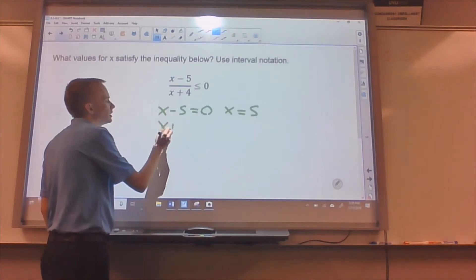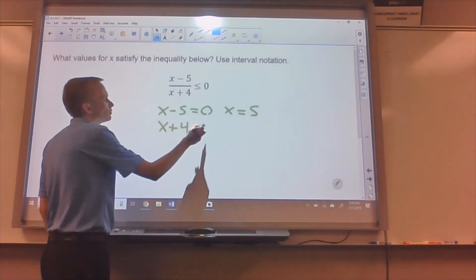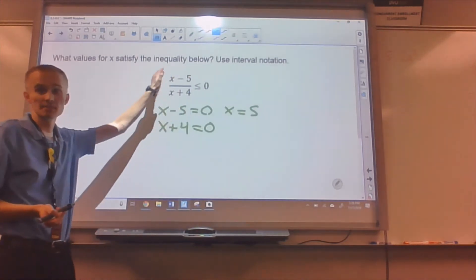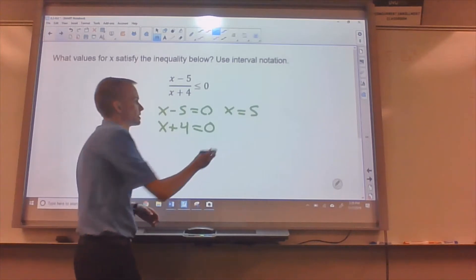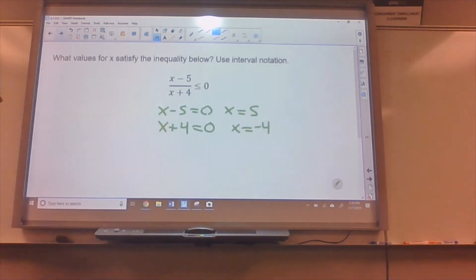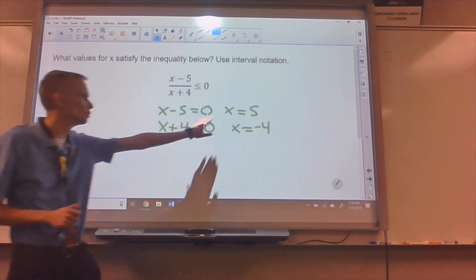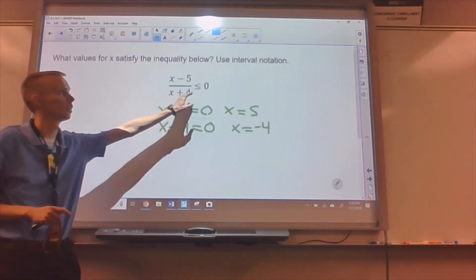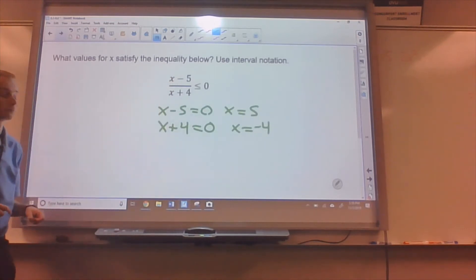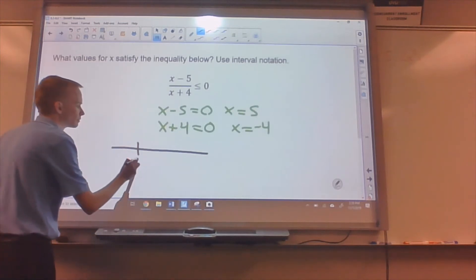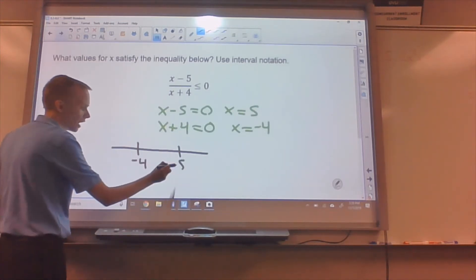Then I set the bottom of the fraction equal to zero because that's where it's undefined, where this number doesn't make any sense. And I get x is negative four. So those are the two places where I can change between this inequality being true and untrue. So I throw those on a number line, negative four and five.